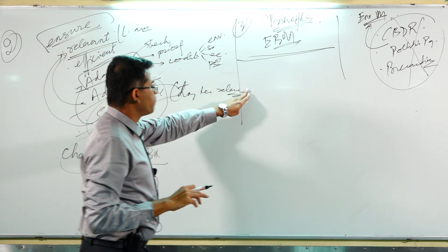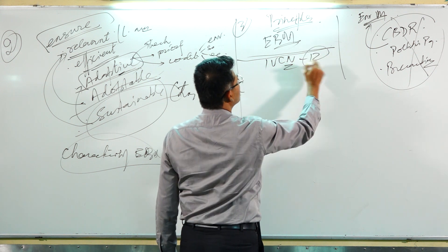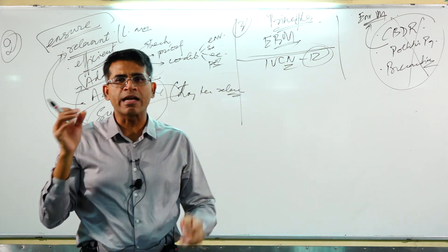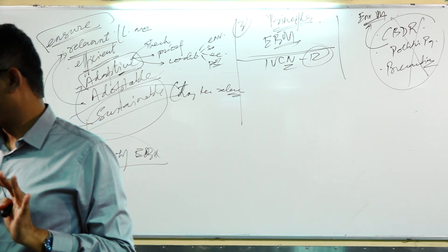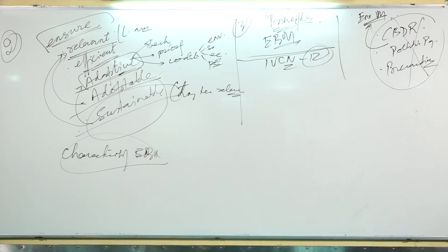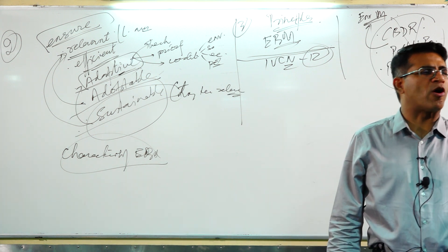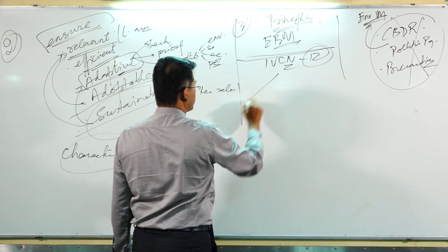IUCN has given us 12 principles which I will club into 4-5 heads for our convenience. I will share with you all. One is that case study of Okosombo project. The second is the list of principles IUCN. Don't memorize that entire list, know the broad heads.